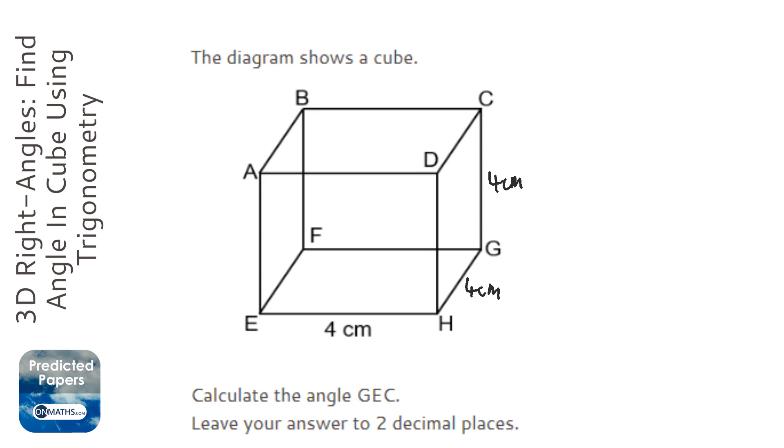With these kinds of questions, the first thing you need to realize is that you are missing this length here, which I'm going to call x. When you find that length, you're going to use it to create a right angle triangle here. We need to find this angle from G to E to C, which I'm going to call y to make things clearer.